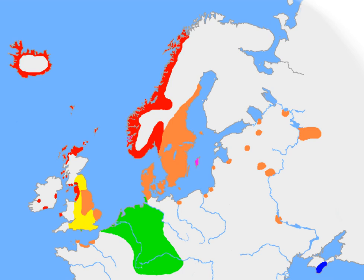Greenlandic Norse was a dialect of Old West Norse spoken by Icelandic colonies in Greenland. When the colonies died out around the 15th century, the dialect went with it. The phoneme 'θ' (theta) and some consonants merged to 't', so that Old Icelandic 'þórr' becomes 'tortur'.